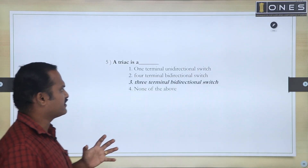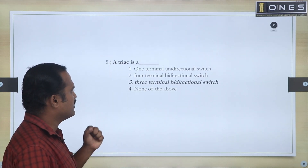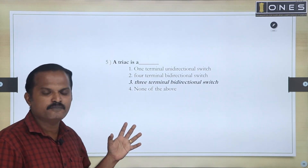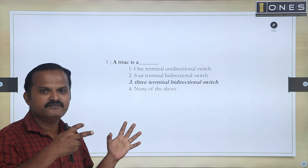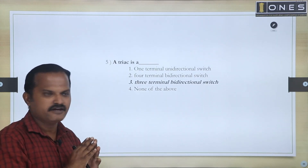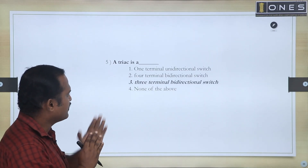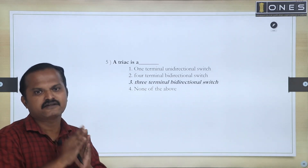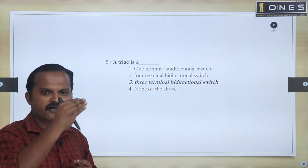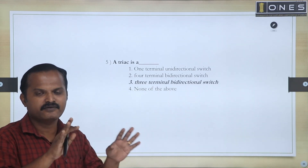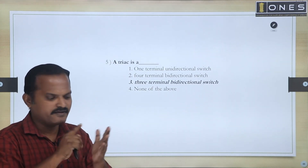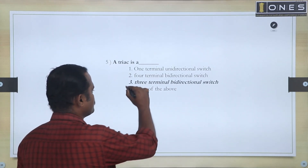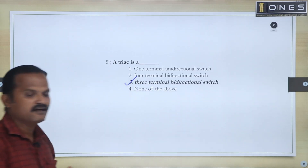Fifth question: A TRIAC. We have already discussed it. TRIAC is a combination of two SCRs in which the gate terminals are shorted. It is a bidirectional switch. TRIAC has three terminals: MT1, MT2, and the gate terminal. So, a TRIAC is a three-terminal bidirectional switch.